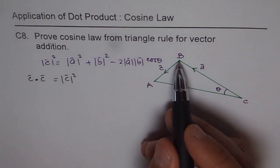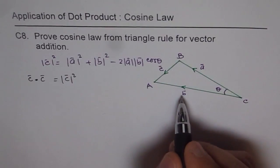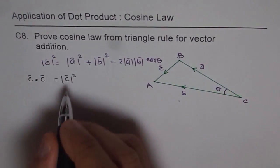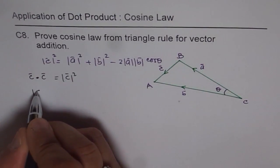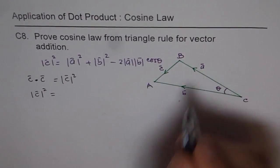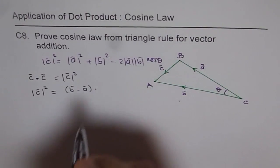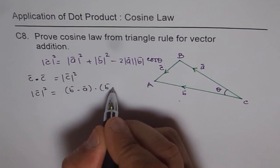Now, if you see what is after all C dot C? Vector C is vector B minus A. So let me write down, rearrange this, and let me write down this as C square is equal to B minus A. So we have vector B minus A dot vector B minus A.